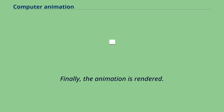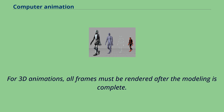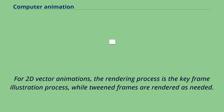The differences in appearance between keyframes are automatically calculated by the computer in a process known as tweening or morphing. Finally, the animation is rendered. For 3D animations, all frames must be rendered after the modeling is complete. For 2D vector animations, the rendering process is the keyframe illustration process, while tweened frames are rendered as needed.